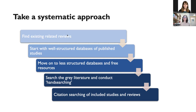It's useful to start by looking for related reviews — number one, you don't want to repeat work that's already been done. Make sure someone hasn't already done a scoping or systematic review on your topic. Also, with published systematic and scoping reviews that are done well, they've reported their search strategies, which can be a great starting point for a comprehensive search strategy. Once we've done that, we tend to start with well-structured databases and then conduct searches in those academic databases.